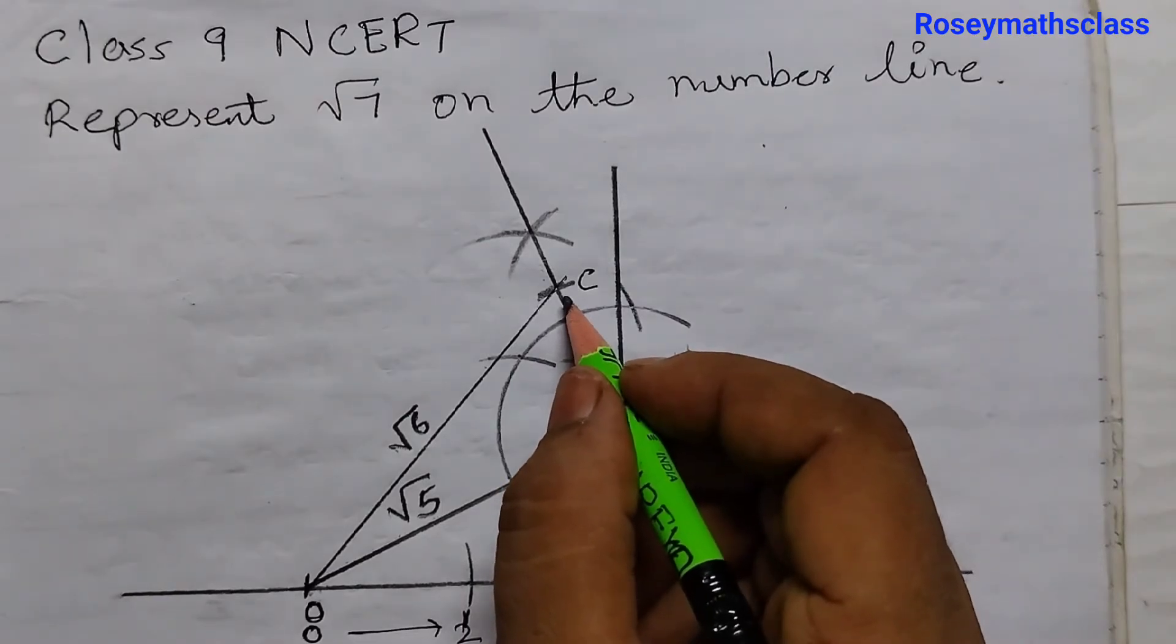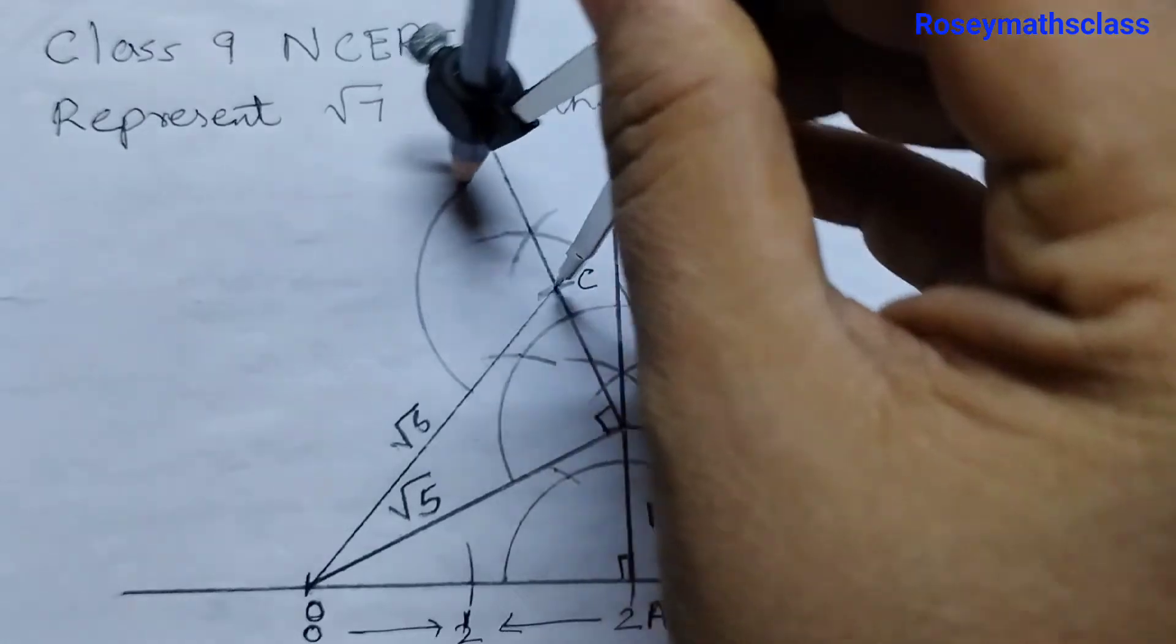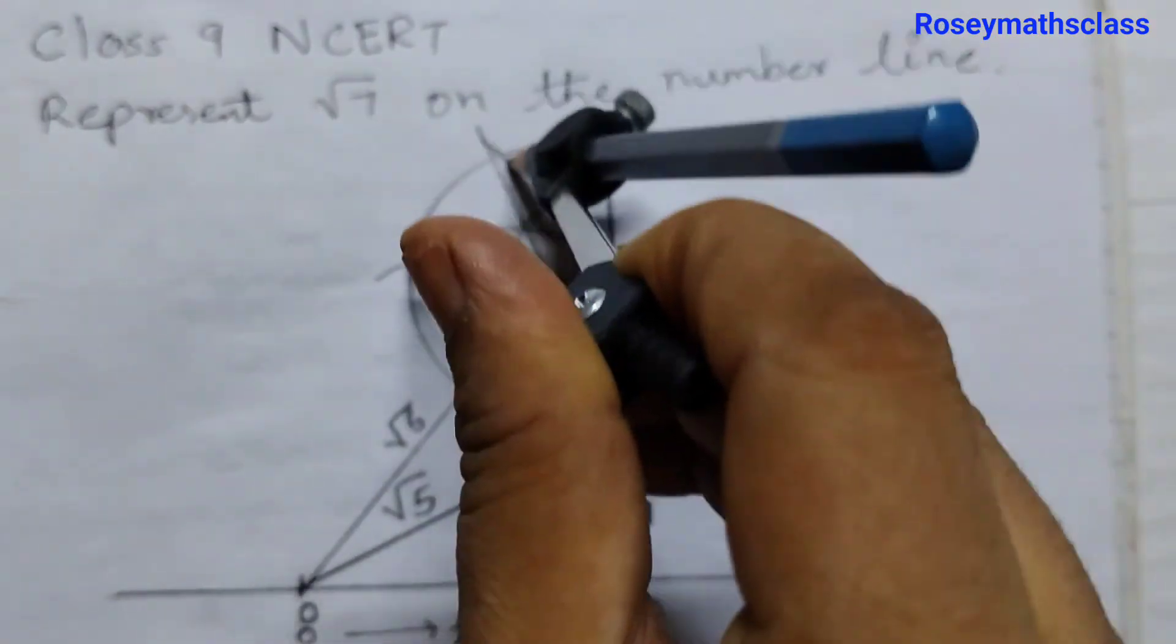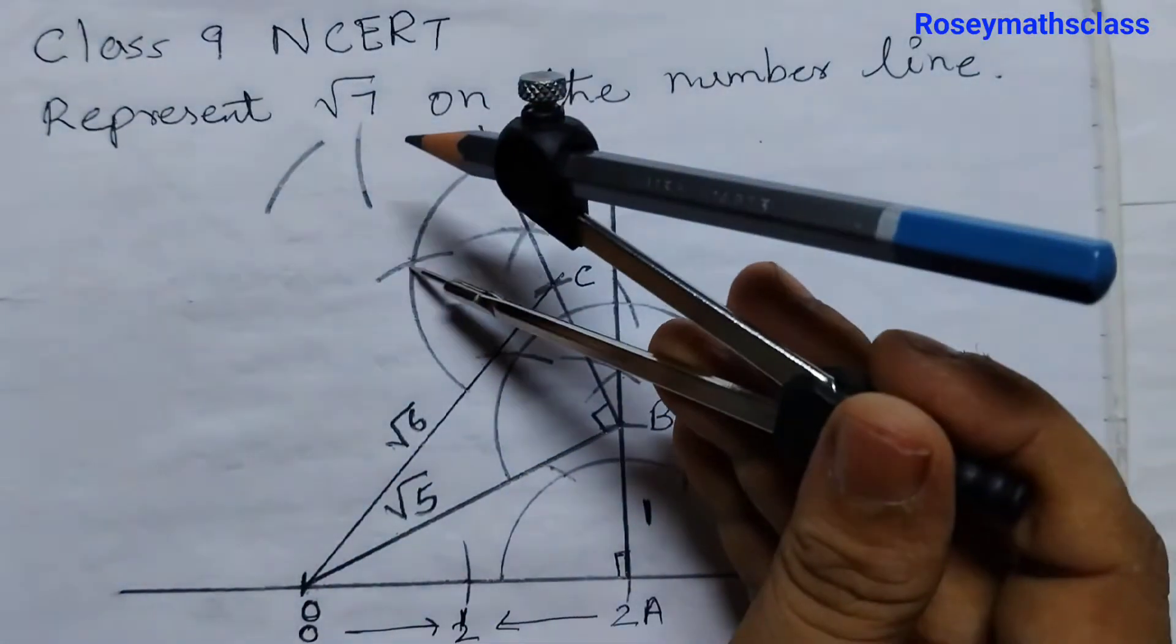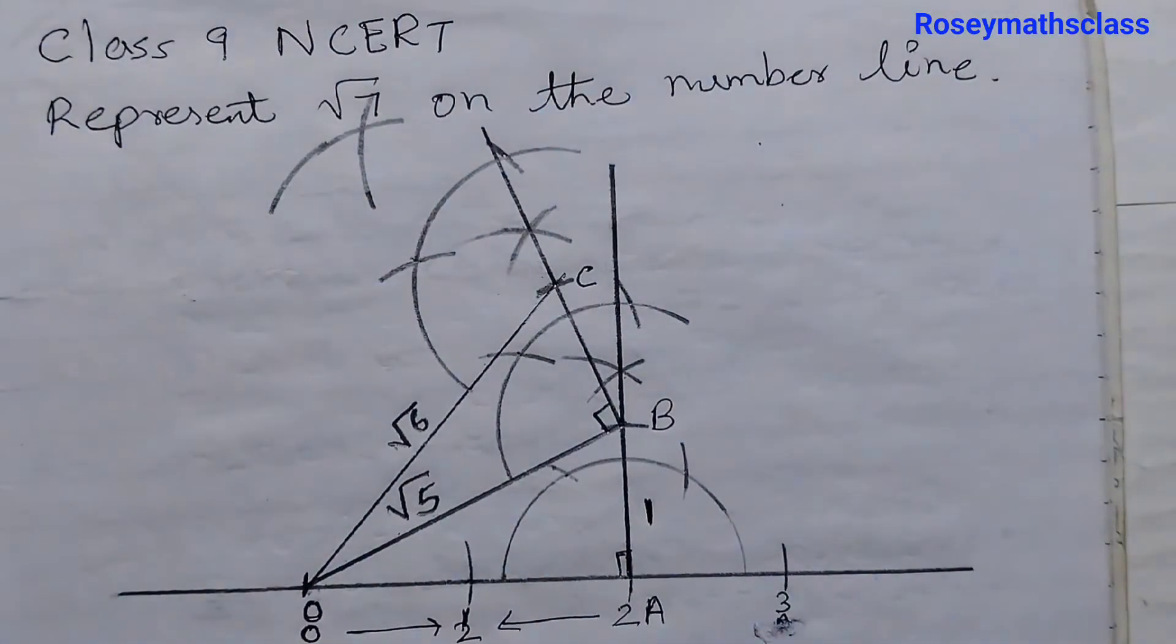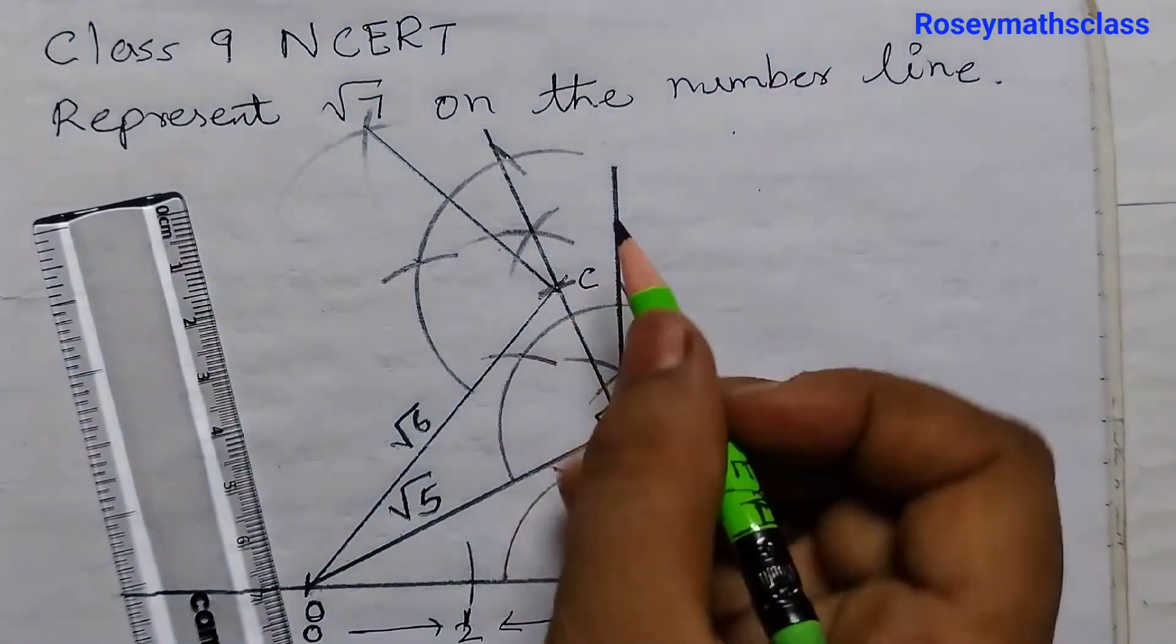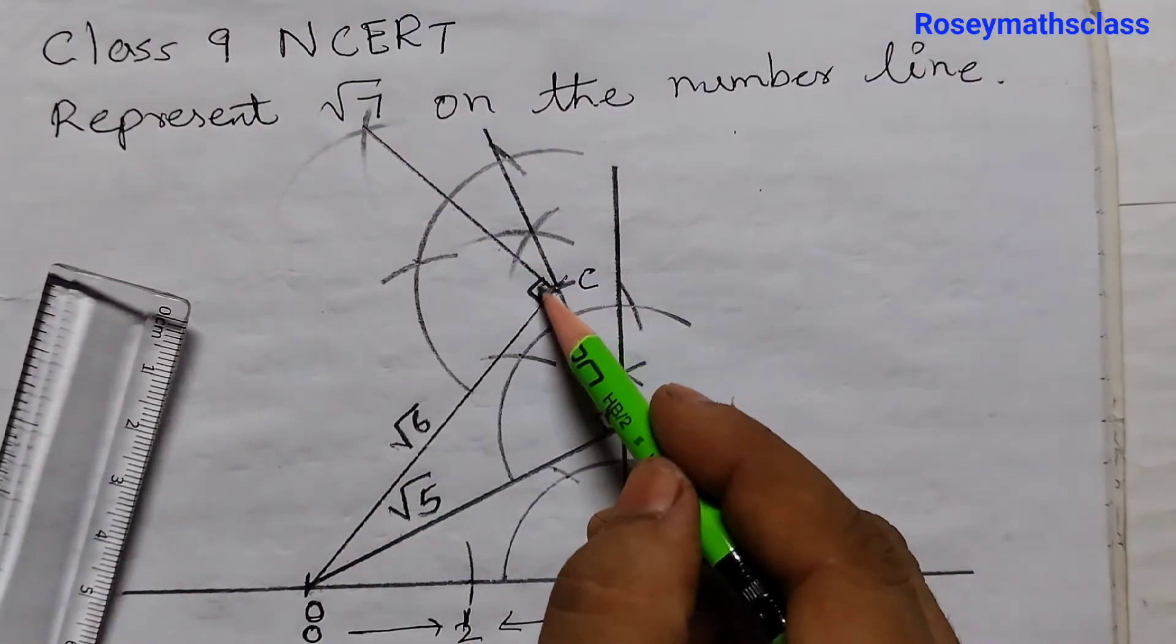Now from C, we are going to draw a perpendicular again. You can take any measurement. Keep the metal point here. First arc for 60 degrees, second arc for 120 degrees, and we will draw intersecting arcs. So if it is not intersecting, we need to extend it. Erase the extra pencil marking. Join these two points. So this is again 90 degrees. Join these two points and this is again a 90 degree angle.